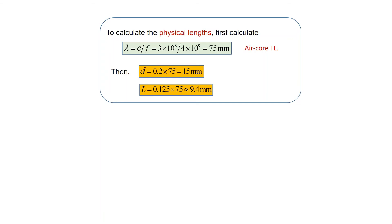That's the design of the impedance matching network complete. If one were to do all of this using equations on paper, it certainly wouldn't be a trivial exercise. There are now many sophisticated software packages for microwave circuit design, including impedance matching network design — some of which are very expensive, running to tens of thousands of euros per year for a single licence.